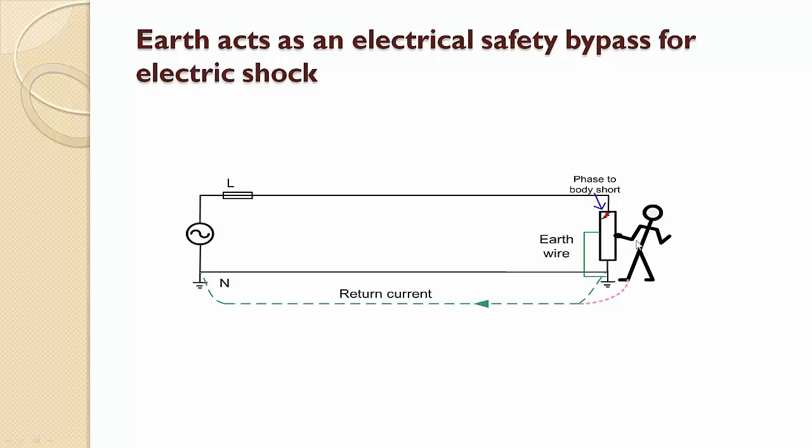So to avoid that, what I have done is I have bypassed, or I have connected an earth wire. That is bonded securely to the metal part of this equipment. And I have earthed that to the earth terminal here. So what happens is, even if there is a phase-to-body fault, the current will pass through the earth wire. And it will complete its path by passing the guy. It will complete its path and return to the source.